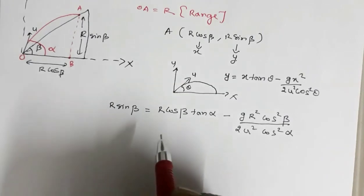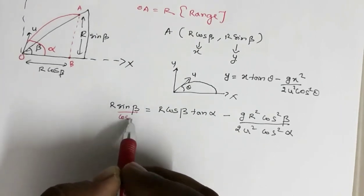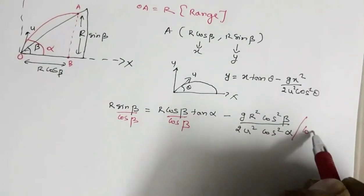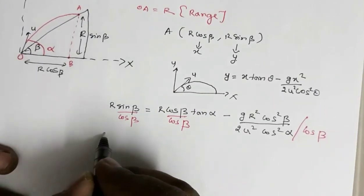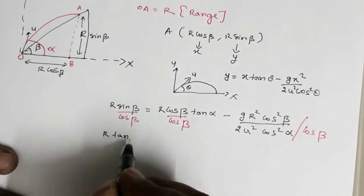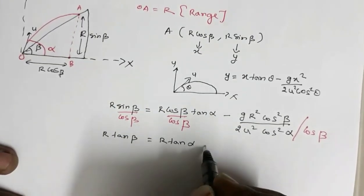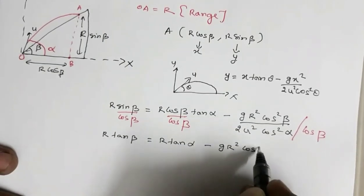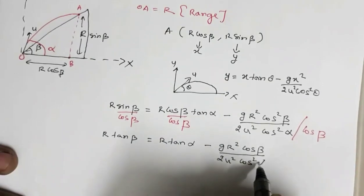Now dividing both sides by cos(beta), we get: sin(beta)/cos(beta) equals r·tan(alpha) minus g·r²·cos(beta) divided by 2u²·cos²(alpha)·cos(beta). So this gives us r·tan(beta) equals r·tan(alpha) minus g·r²·cos(beta) divided by 2u²·cos²(alpha).